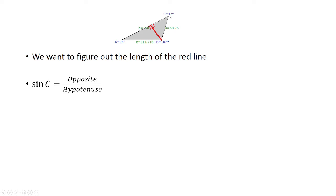The sine of angle C is the opposite side, which is the red line, divided by the hypotenuse, which is a length 68.76.